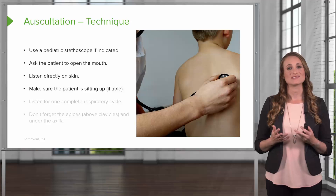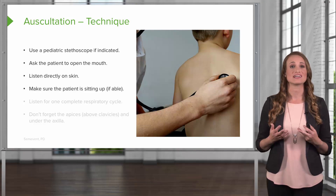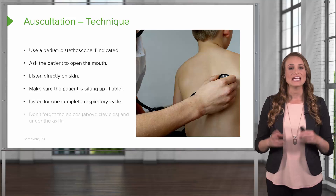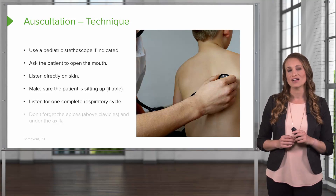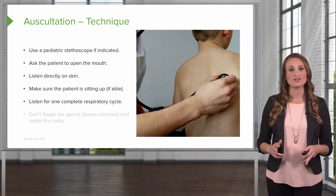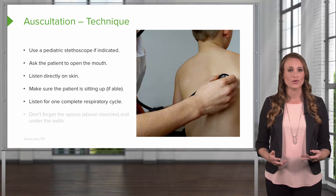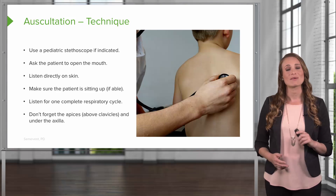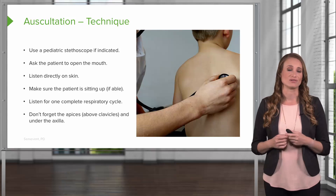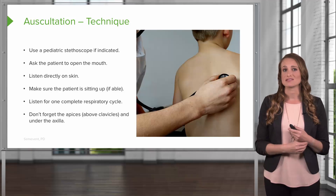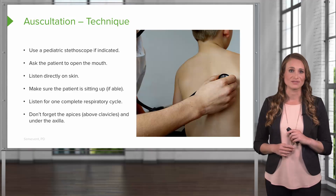You want to make sure the patient is sitting up if they're able, and this is going to allow them to fully expand their lungs. In each position, you're going to listen for one complete respiratory cycle — that includes a full inhalation and a full expiration. Don't forget about the apices of the lungs, which are found above the clavicles. You also want to listen all around the ribcage, under the axilla, so that you get every lung field.